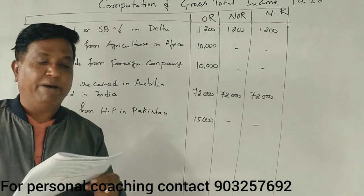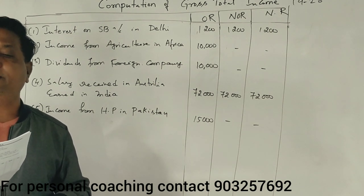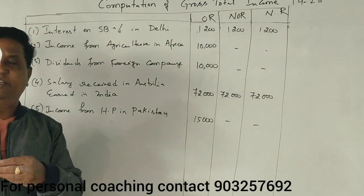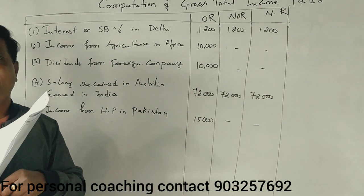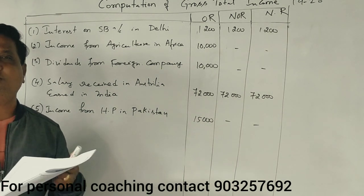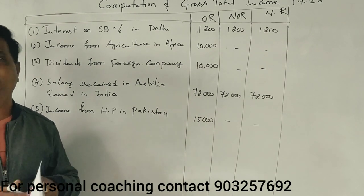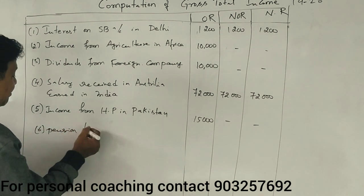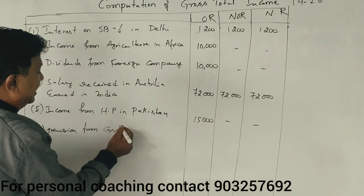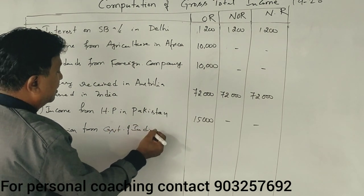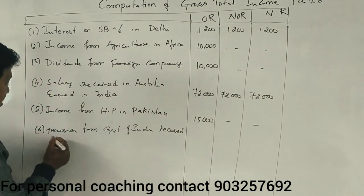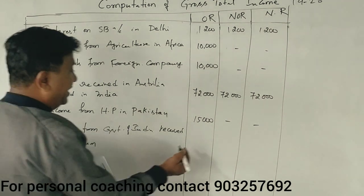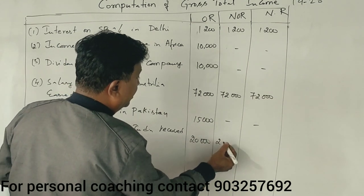Last point: pension received from Belgium for services rendered in India with a limited company — ₹20,000. Pension from Government of India. The Indian government is the payer. Pension received in India — three cases. Pension from Government of India, received in India, amount ₹20,000. Taxable in all three cases.